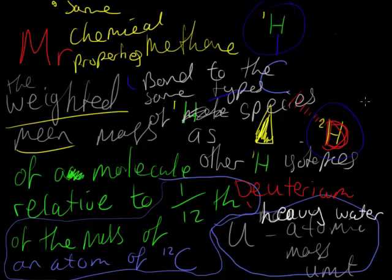Because of this, when we're doing these sorts of calculations we assume that the percentage abundances of the different isotopes present are the same as those used to calculate the relative atomic masses provided on the periodic table. This means when calculating relative molecular masses, we can use the relative atomic masses given on the periodic table, adding those values in place of the different atoms.